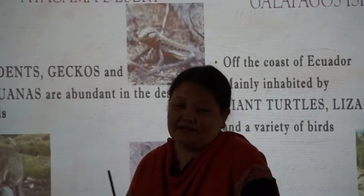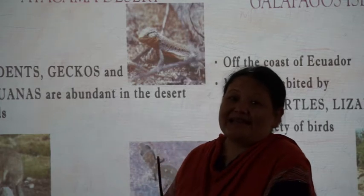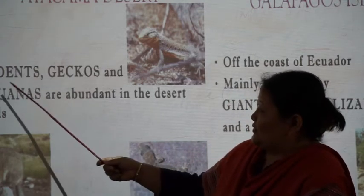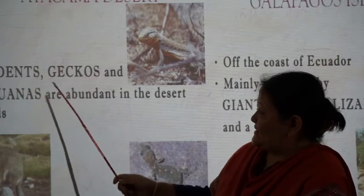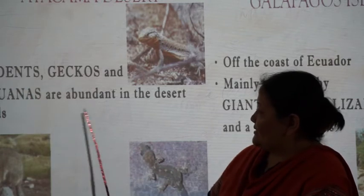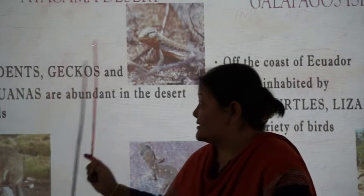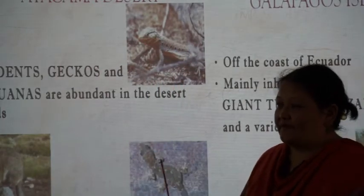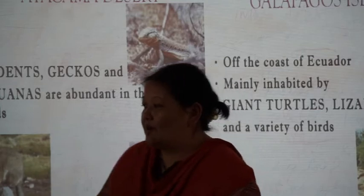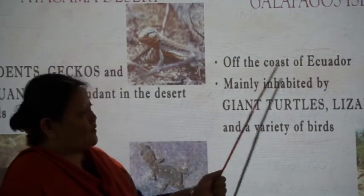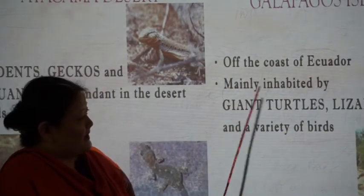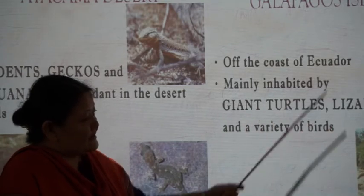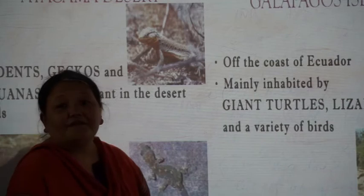In the Atacama desert, where there is very little water and very little rainfall, you have rodents, geckos and iguanas abundant in the desert sands. In the Galapagos Islands, off the coast of Ecuador, the area is mainly inhabited by giant turtles, lizards and a variety of birds.